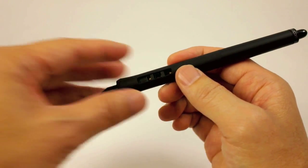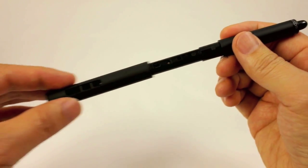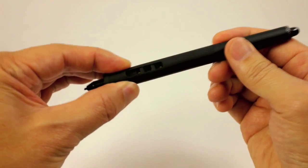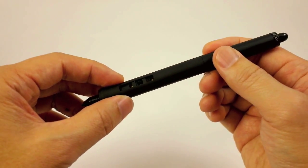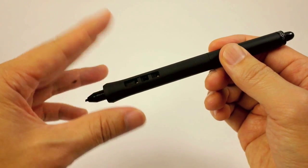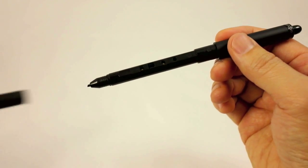Gently slide the default grip straight out of the pen. Do not apply pressure to the grip nor twist the grip as you're pulling it out. These actions may damage the pen. Once again, gently hold the grip and slide it straight out.